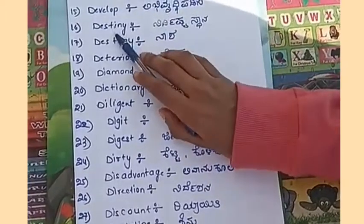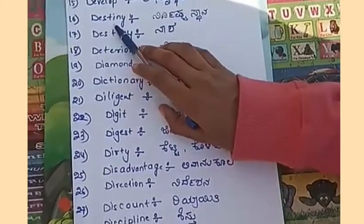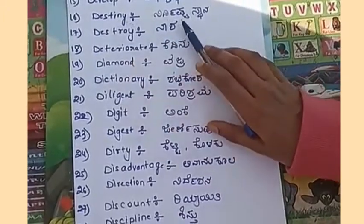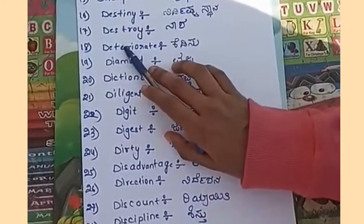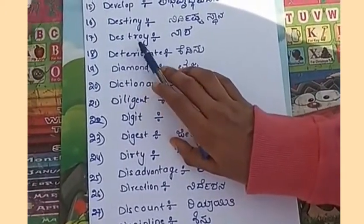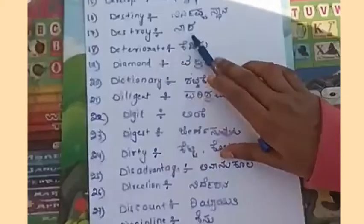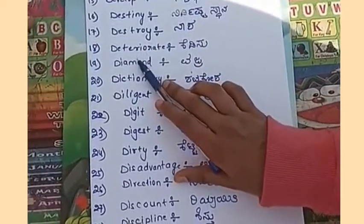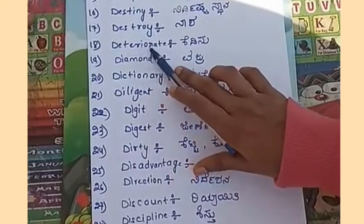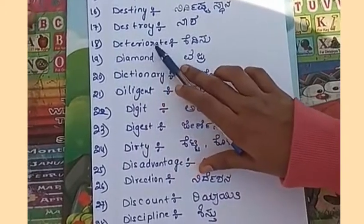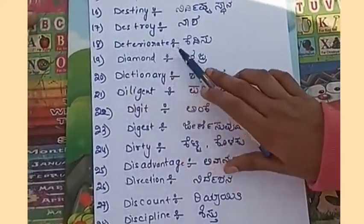Destiny, D-E-S-T-I-N-Y, destiny — nirdishtra sthana. Destroy, D-E-S-T-R-O-Y, destroy — nasha. Deteriorate, D-E-T-E-R-I-O-R-A-T-E, deteriorate.